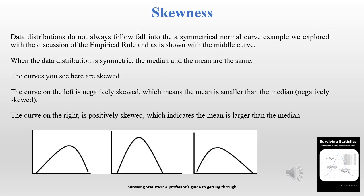In the last chapter we talked about the empirical rule, which assumes data falls along a normal distribution — the middle of the three curves shown. Data isn't always distributed symmetrically; sometimes the data is skewed. The curve on the left is negatively skewed, which means the mean is smaller than the median. When data is perfectly symmetrical the median and mean will be the same value. The curve on the right is positively skewed, meaning the mean is larger than the median.